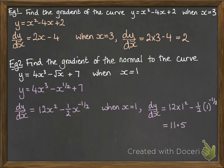So this gives us the gradient of the curve at x equals 1. And if we want the gradient of the normal, that will be the negative reciprocal. Now 11.5 is the same as 23 over 2, so the negative reciprocal would be minus 2 over 23.